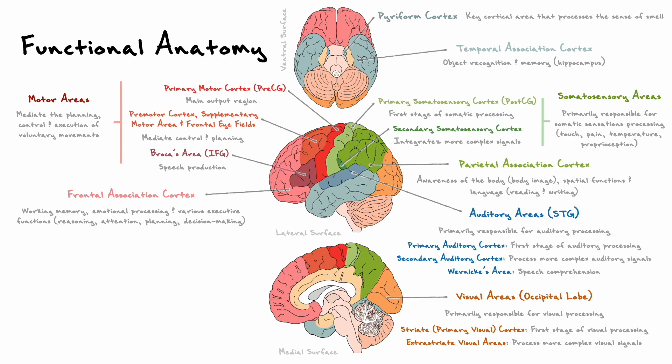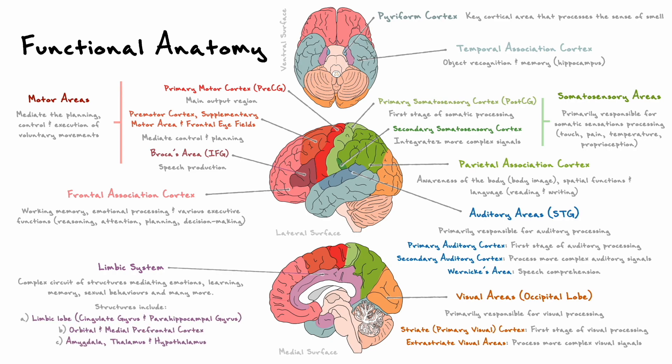The last functional region I want to point out is the limbic system, which can be best seen on the medial surface. The limbic system is a complex circuit of different structures that mediates our emotions, some forms of learning and memory, sexual behaviors, and many more. Some notable structures that participate in this circuit include the cortical regions of the limbic lobe — the cingulate and parahippocampal gyrus — the medial and orbital frontal cortex, the amygdala, the thalamus, and the hypothalamus.